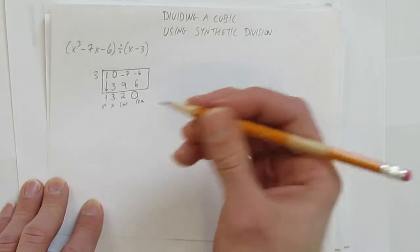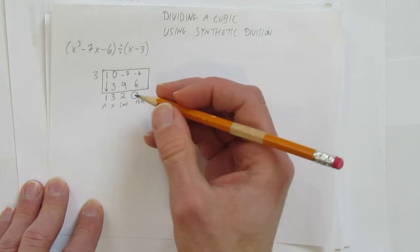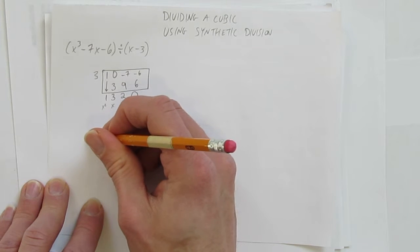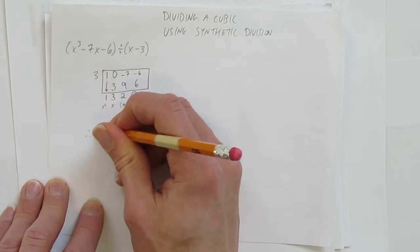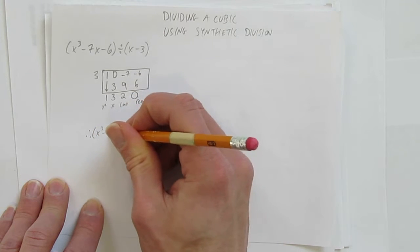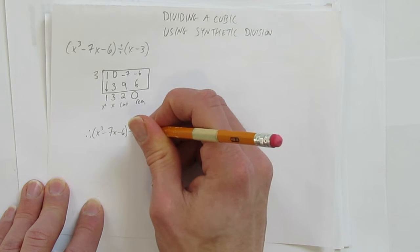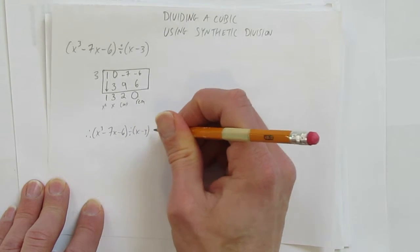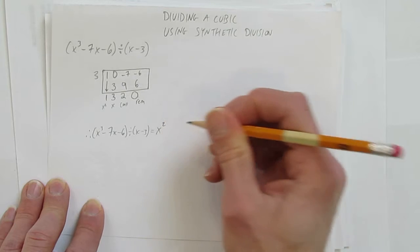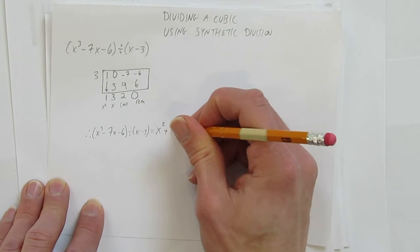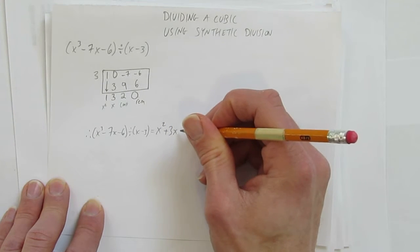So now I have my result. I can just state my result. Therefore, if you take x³ - 7x - 6 and divide it by x - 3, the answer you get is x² + 3x + 2.